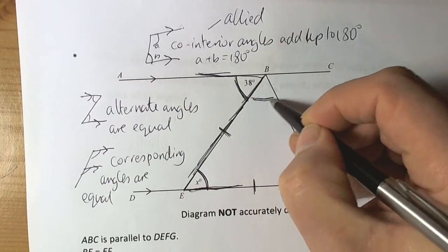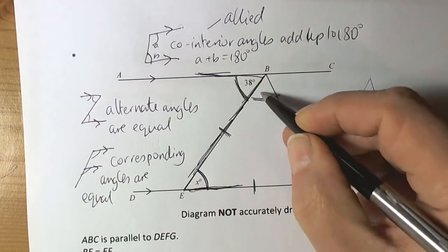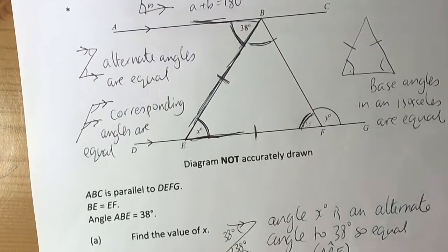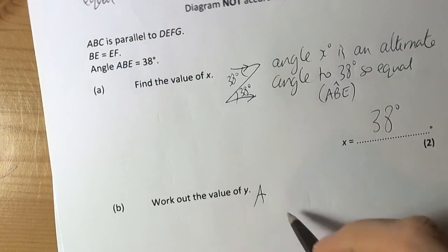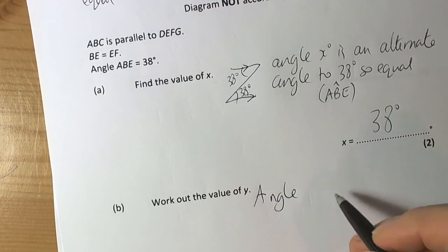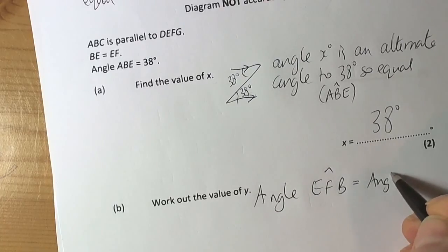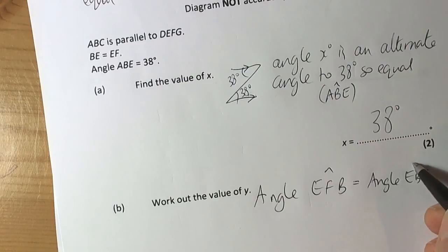Two dashes are telling me that we're going to the end of these lines. So therefore these angles here and this angle here must be the same. So here I can say that angle EFB is equal to angle EBF.